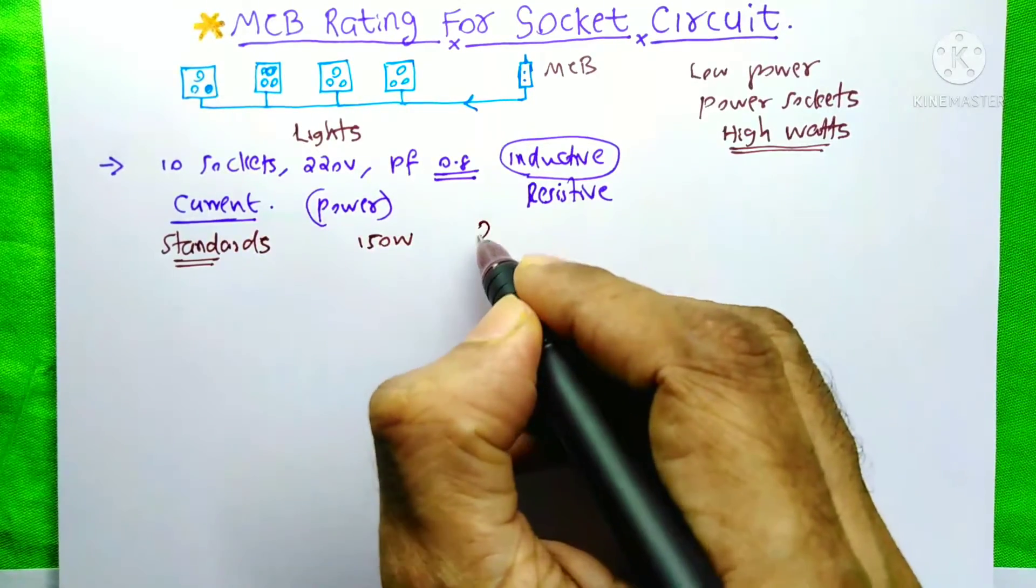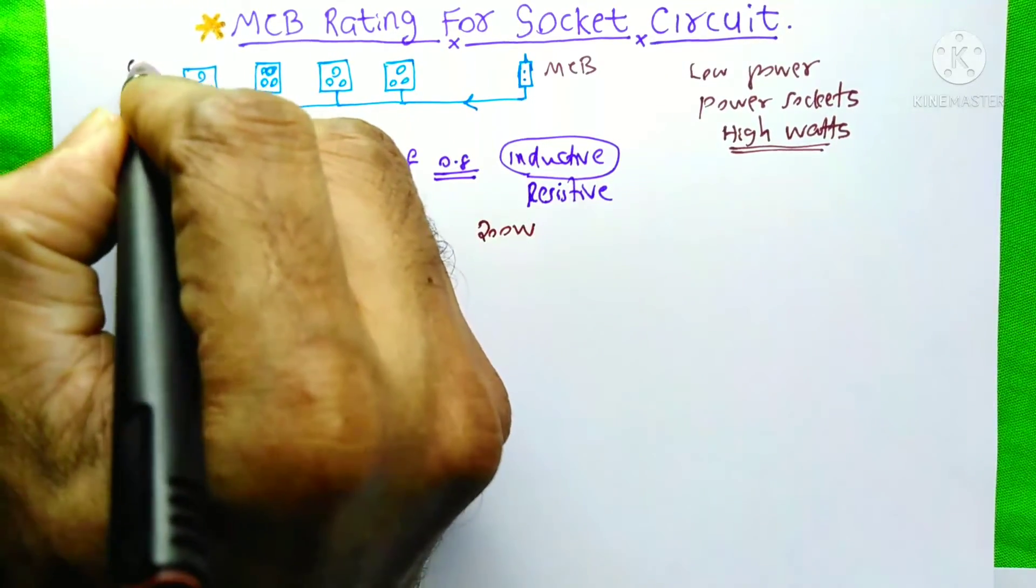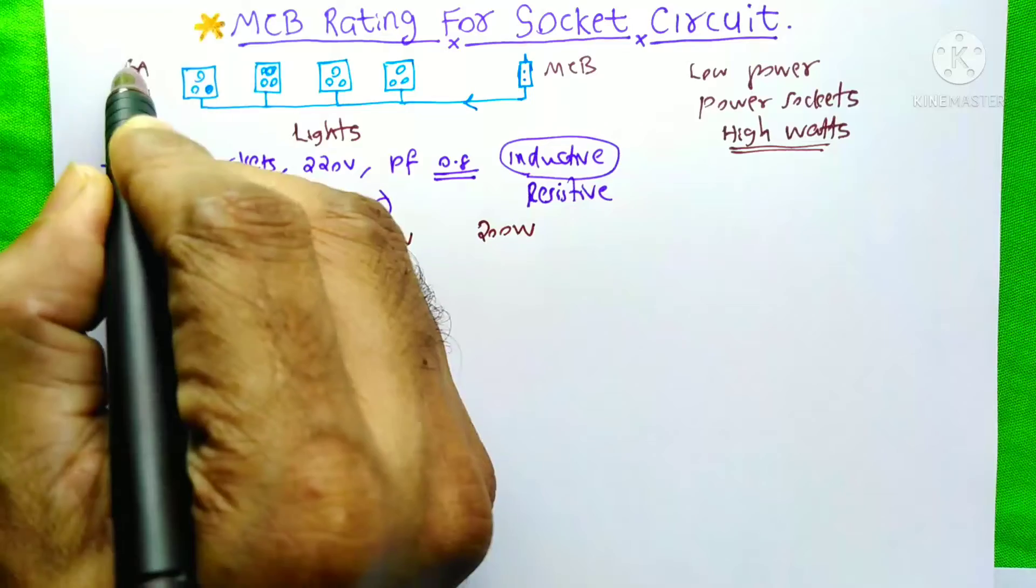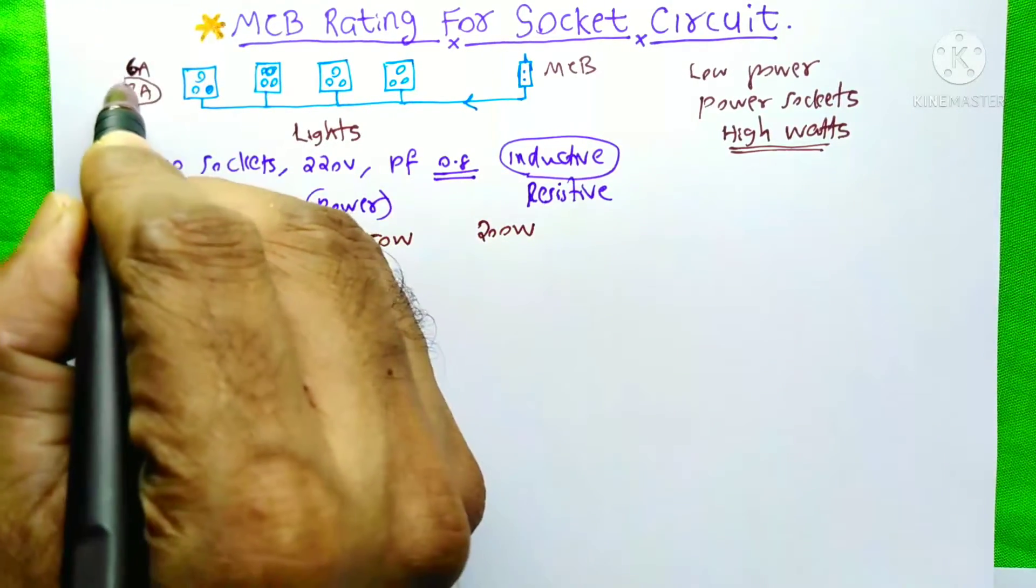But some countries assume it has 200 watts. When you look at the sockets you can see 6A, 13A etc. Some countries government allows 6A for these low power sockets. But some countries allow only 13A.